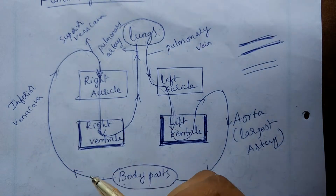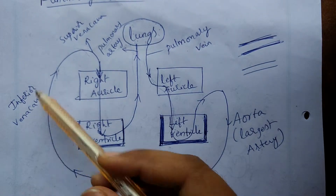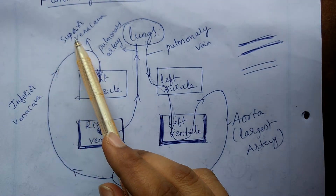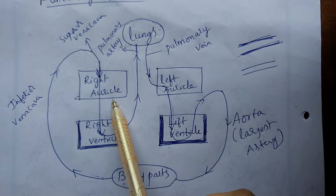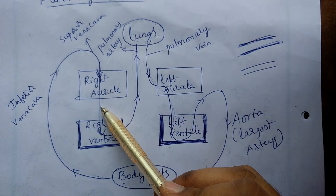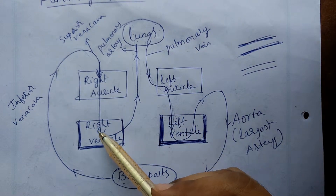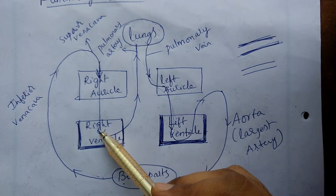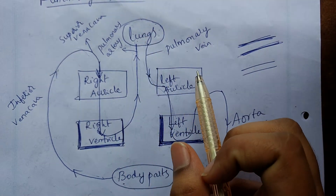The vena cava is nothing but a vein. It has inferior and superior types. The impure blood from the inferior and superior vena cava enters the right auricle, and then the right auricle passes it into the right ventricle. The impure blood is now in the right ventricle.